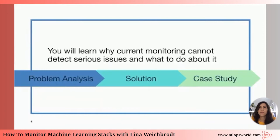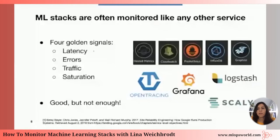How do we typically monitor a machine learning stack? We monitor it like any other service using the four golden signals from Google SRE: latency (how fast is the application), errors, traffic, and saturation of resources like CPU load. You have a bunch of tools for this, and you should definitely monitor an ML stack for these four golden signals — but this is not enough. There are additional problems that can occur in a machine learning stack.